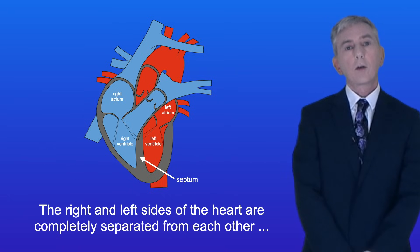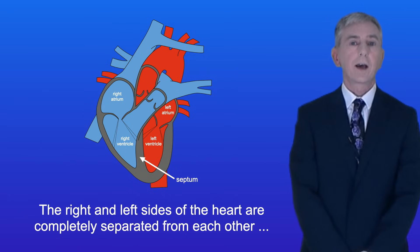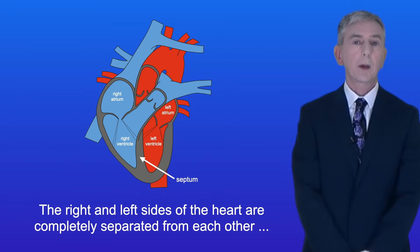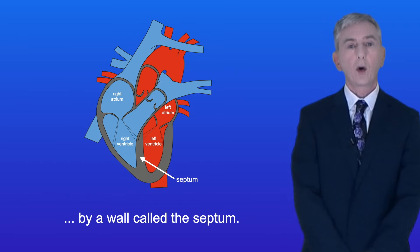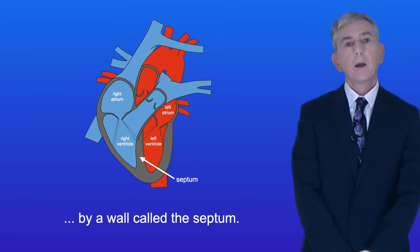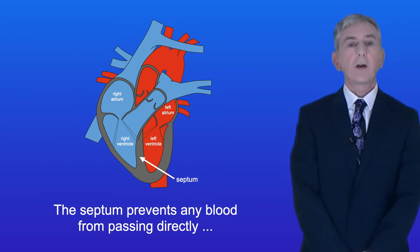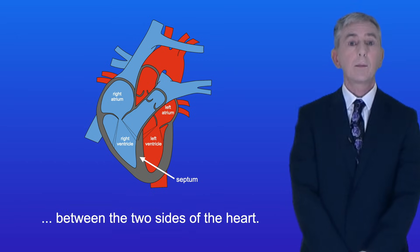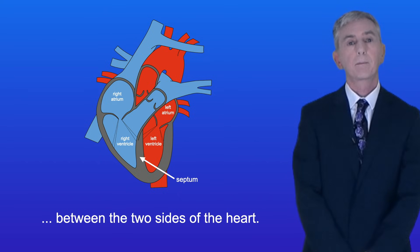The right and left sides of the heart are completely separated from each other by a wall called the septum. The septum prevents any blood from passing directly between the two sides of the heart.